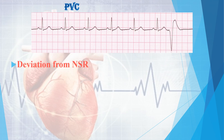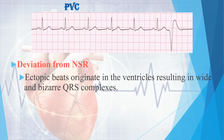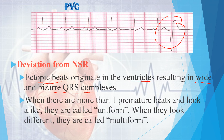In such cases, Class 1C agents should not be given to avoid pro-arrhythmic effects. On ECG, ectopic beats originate in the ventricles, resulting in wide, bizarre QRS complexes visible on the graph. When multiple premature beats look alike they are called uniform PVCs; when they look different they are called multiform PVCs.